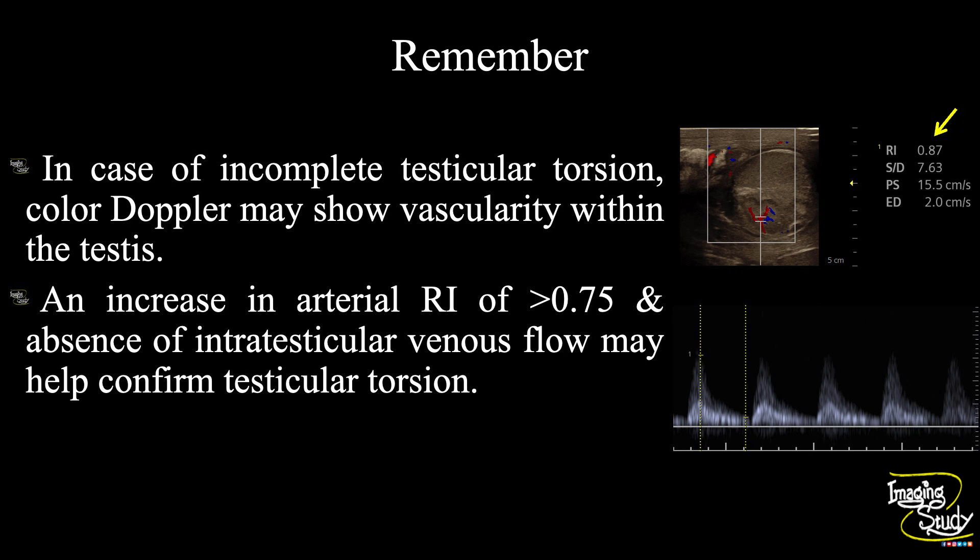The take-home message: you may encounter cases of incomplete testicular torsion where you will see intratesticular vascularity on color Doppler, which can be confusing. In these cases, an increase in arterial resistive index of more than 0.75 and absence of intratesticular venous flow may help confirm testicular torsion.